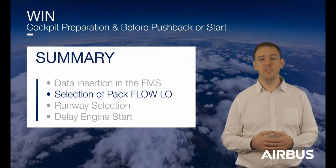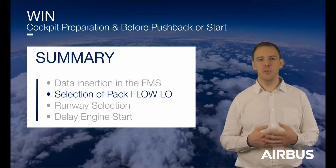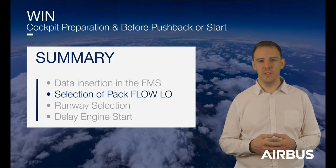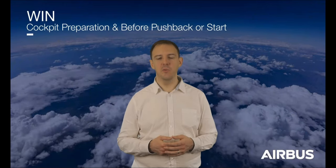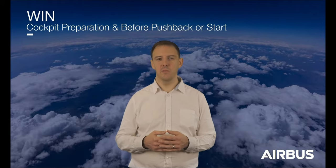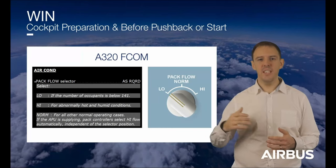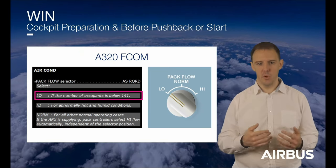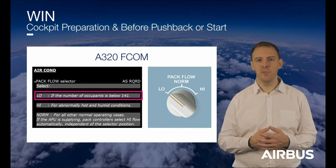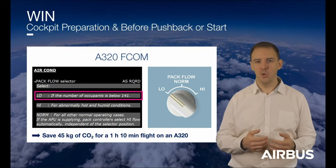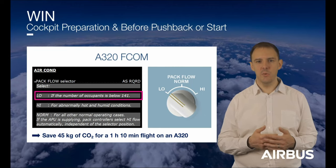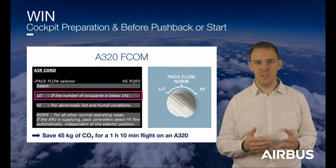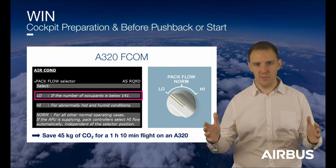The second way to save fuel and reduce emissions is to consider the number of passengers on board. If the aircraft is not full, the flight crew should reduce the airflow in the cabin. The SOP will request the selection of pack flow to low when the number of passengers on board is below a certain value. For example, on an A320 family aircraft with 132 people on board, the flight crew can set the pack flow to low. This can save up to 0.5% of fuel for the entire flight — on a 1 hour 10 minute flight from Toulouse to Paris-Orly on an A320, CO2 emissions will be reduced by 45 kg. Limited savings in every flight become major savings when applied to the entire fleet on a yearly basis.